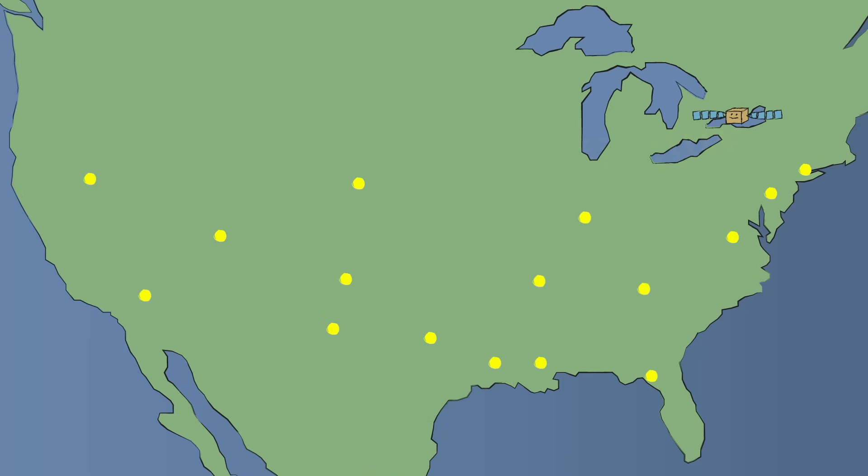From there, the maps are picked up by antennas at the National Weather Service Forecast offices in each region. There are more than 100 offices!